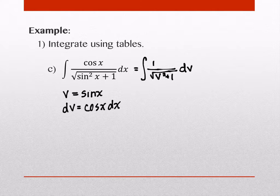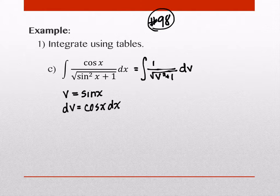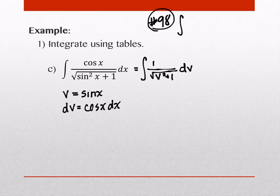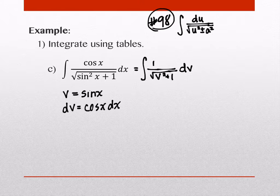So as we're looking at our table options, then, for this one, the right one for this one that ends up matching is 98. Let me write down what 98 looks like. And you'll get quicker at identifying which ones match as you're working with these. But 98 looks like this. It's the integral of du, that's how they write it, over the square root of u squared, plus or minus a squared.